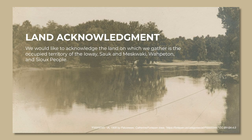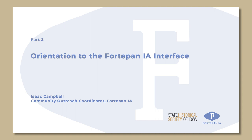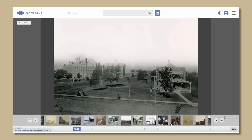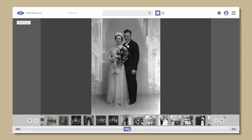We would like to acknowledge the land on which we gather is the occupied territory of the Iowa, Saakon-Muskwaki, Wahpeton, and Sioux people. The goal of Fort Upon Iowa is to make photos as accessible and searchable as possible. We have tried to create a beautiful interface to make searching enjoyable, engaging, and easy to use. Here is a basic orientation to the interface.